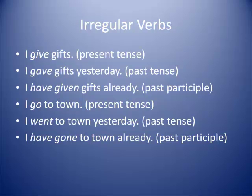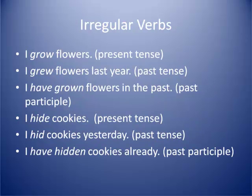I go to town — present tense. I went to town yesterday — past tense. I have gone to town already — past participle. I grow flowers — present tense. I grew flowers last year — past tense. I have grown flowers in the past — past participle.